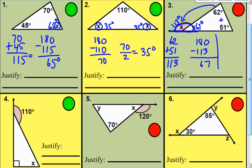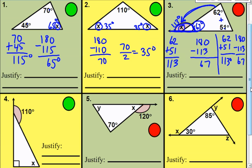There is another way to do it: add 62 plus 51 to get 113, then subtract from 180 to get 67 degrees — but that gives you the supplementary angle, not x. Then you'd do 180 minus 67 to get 113. The easiest way is to remember that the two non-adjacent angles added together equal the exterior angle: 62 plus 51 is 113, so the exterior angle is 113.